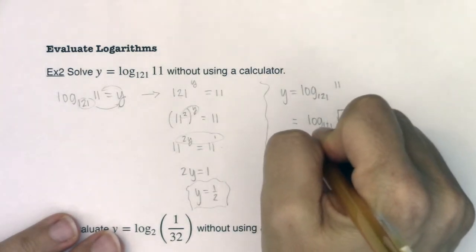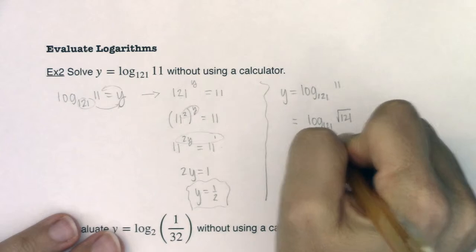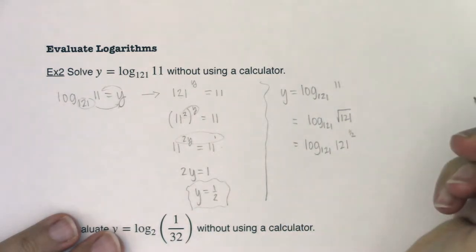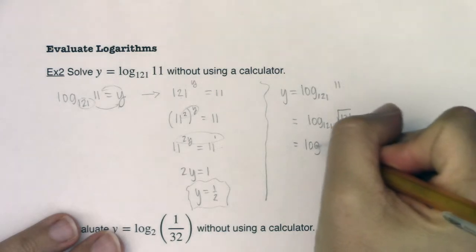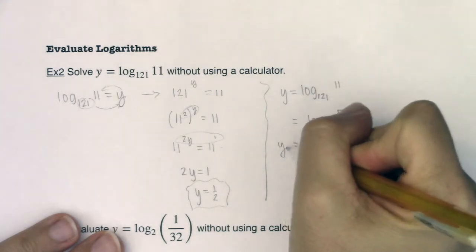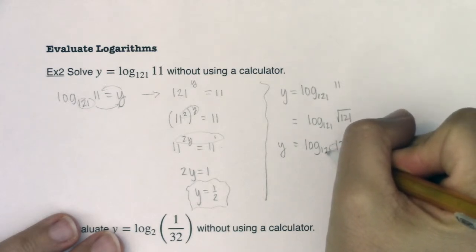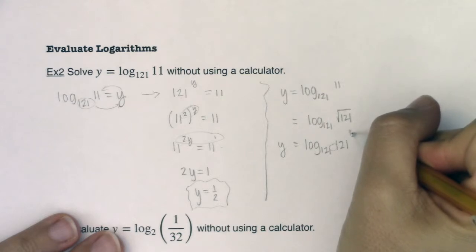Well, I could say this was log base 121 of 121 to the 1 half. And so keeping in mind that this y is an exponent, this is asking me, what exponent do I need on 121 to get it to be 121 to the 1 half?